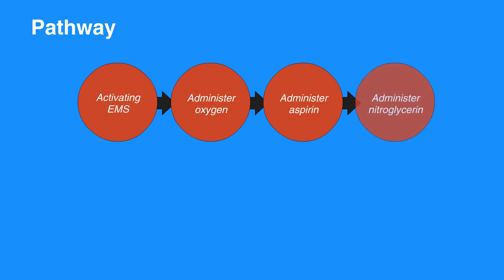Administer nitroglycerin: give 0.3 to 0.4 mg sublingual or spray, two doses at 3 to 5 minute intervals. Do not use if systolic blood pressure is less than 90 mmHg, or if a phosphodiesterase inhibitor like Viagra has been taken within 24 hours. Administer morphine — give 1 to 5 mg intravenously only if symptoms are not relieved by nitrates or if symptoms recur. Monitor blood pressure closely.